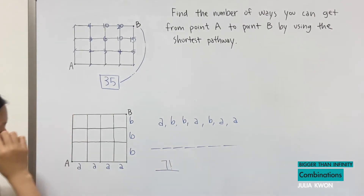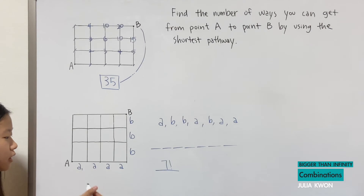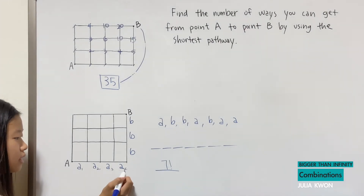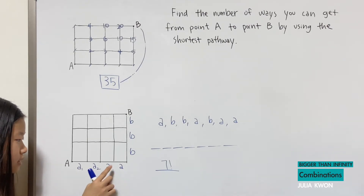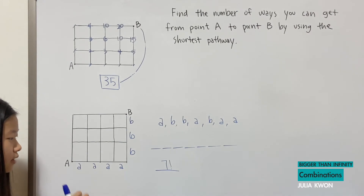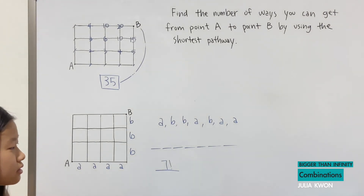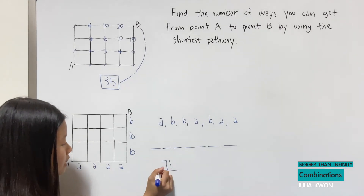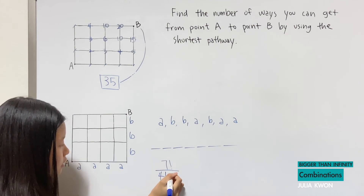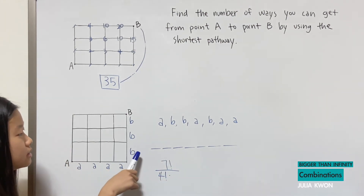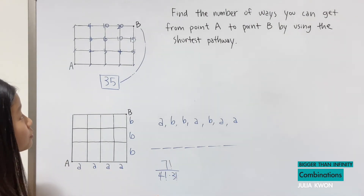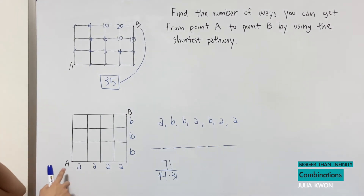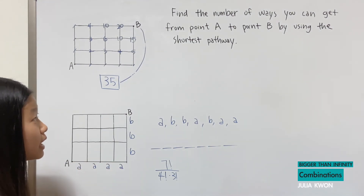But since the A's are not labeled A-sub-one, A-sub-two, A-sub-three, A-sub-four — they are all the same A — and the B's are all the same B, we need to divide. Since we have four identical A's, we divide seven factorial by four factorial, and also divide by three factorial since we have three identical B's. So the answer is seven factorial divided by four factorial times three factorial.